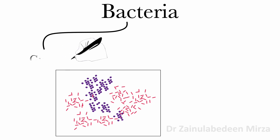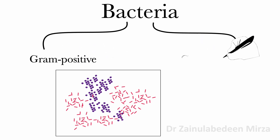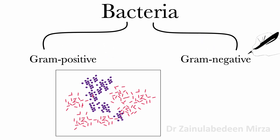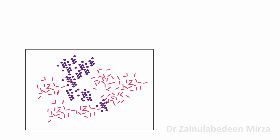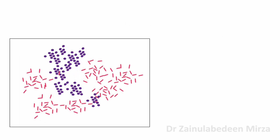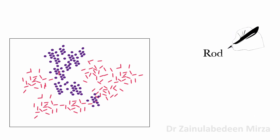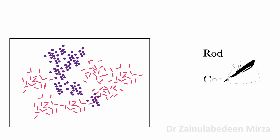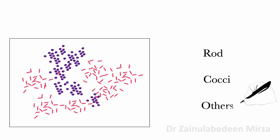Bacteria are divided into gram-positive and gram-negative. Bacteria cells are known to be rod, cocci, spiral, and other shapes.